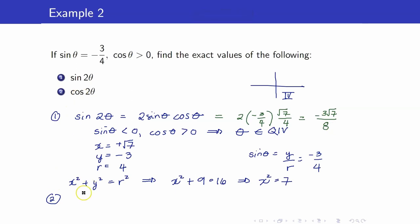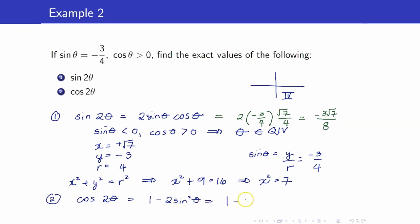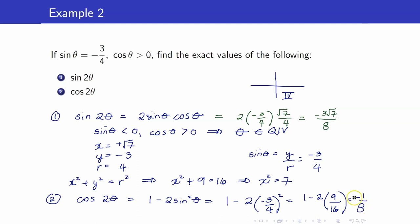For the second one, we want to evaluate cosine of 2 theta. You have three formulas to choose from; however, I will use the one which involves sine only: 1 minus 2 sine squared theta. It's just direct substitution: 1 minus 2 times sine theta (which is negative 3 fourths) squared. So that's 1 minus 2 times 9 over 16, which gives negative 2 over 16, or negative 1 eighth.